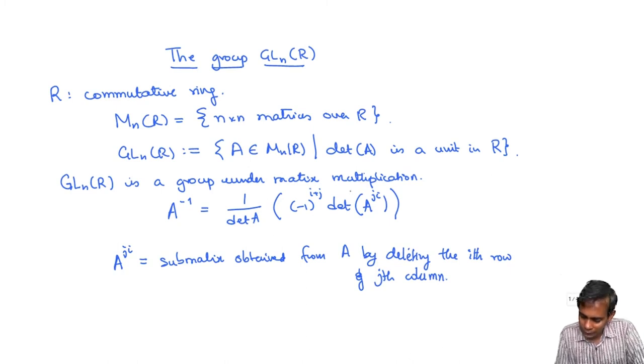So the only thing that is needed for this formula to work is... So this formula works—you've usually seen it over fields like the real numbers or rational numbers or complex numbers. But the only thing you really need is an associative multiplication in a commutative ring and you just need that this 1 over determinant of A is defined.